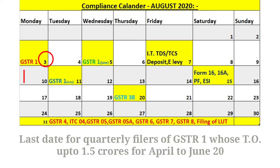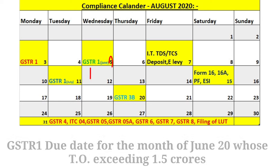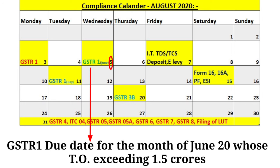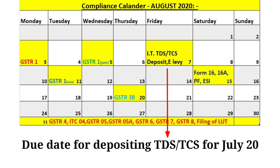August 3rd is the due date for the quarterly filers of GSTR1 whose aggregate turnover is up to 1.5 crore, for April to June 2020. August 5th is the due date for filing GSTR1 for the month of June 2020 whose aggregate turnover exceeds 1.5 crore. August 7th is the due date for depositing TDS or TCS for the month of July 2020.